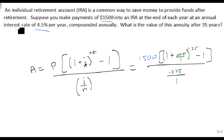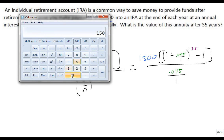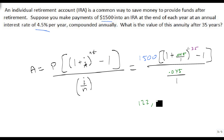So we get out a calculator and we type this in. 1,500 times parenthesis, parenthesis, 1 plus 0.045, close parenthesis, raised to the 1 times 35, close, minus 1, close, divided by 0.045 divided by 1, close that parenthesis, we hit equal, and this will be worth $122,244.98.